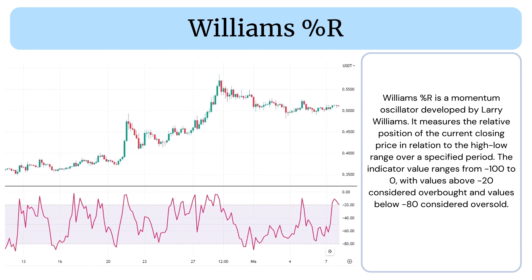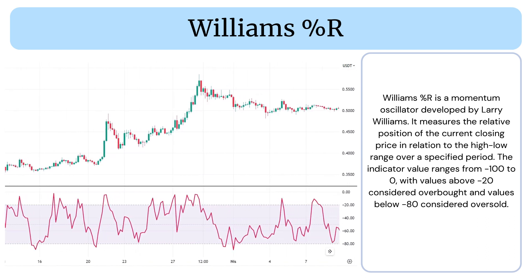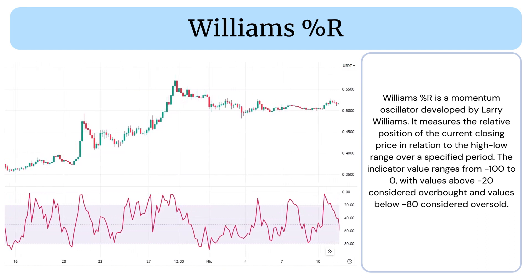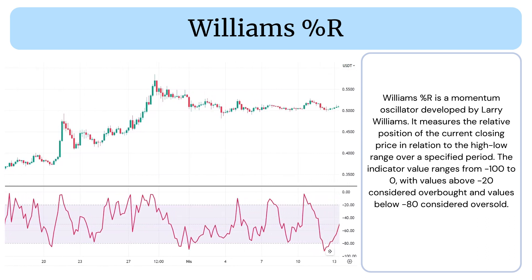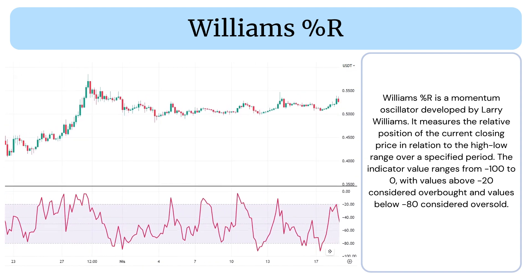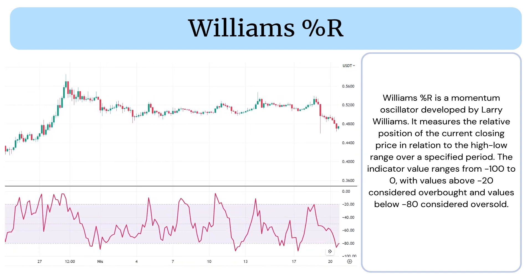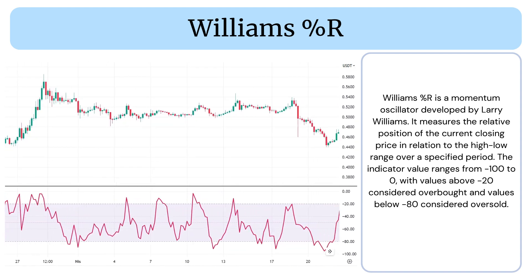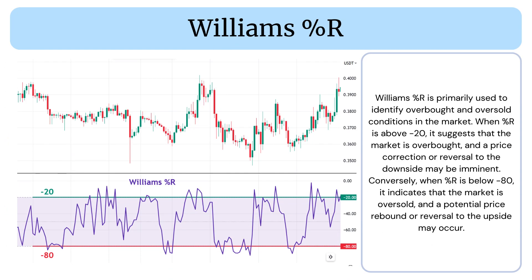The indicator value ranges from 100 to 0, with values above 20 considered overbought and values below 80 considered oversold. Williams Percent R is primarily used to identify overbought and oversold conditions in the market.